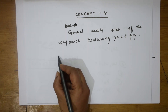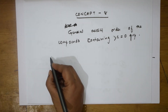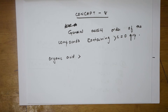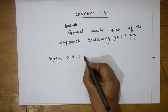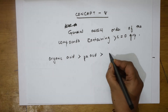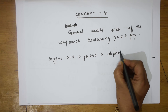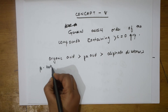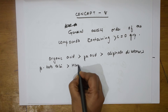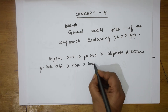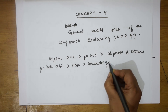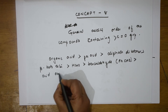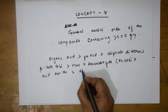First of all, remember the order. The highest acidity is the organic acid. If they ask you which is more acidic in the exam paper, remember this order and go — it's easy. After organic acid, it is peracid. After that, it is dialiphatic diketones, greater than beta keto esters, which is greater than formaldehyde, greater than benzaldehyde (PhCHO).